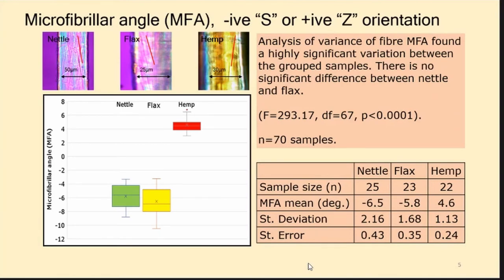The features we chose — this is some of the work we did previously, presented at the EA conference a couple of years back — are microfibre angle particularly. Looking at the graph, nettle has a microfibre angle of S, while flax has a microfibre angle the other way. Images are done from small samples of fibre in distilled water mounts with a cover glass, analysed through a microscope at 400x magnification. Hemp is well separated from nettle and flax, and the analysis of variance shows a significant difference between them.